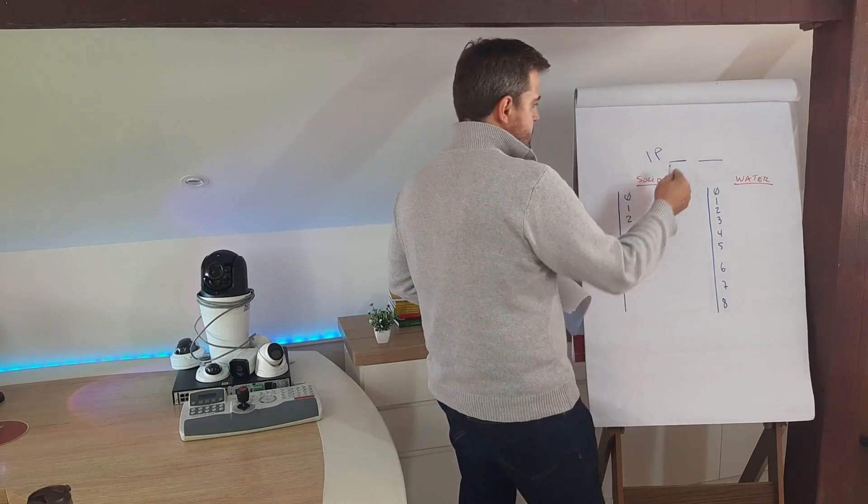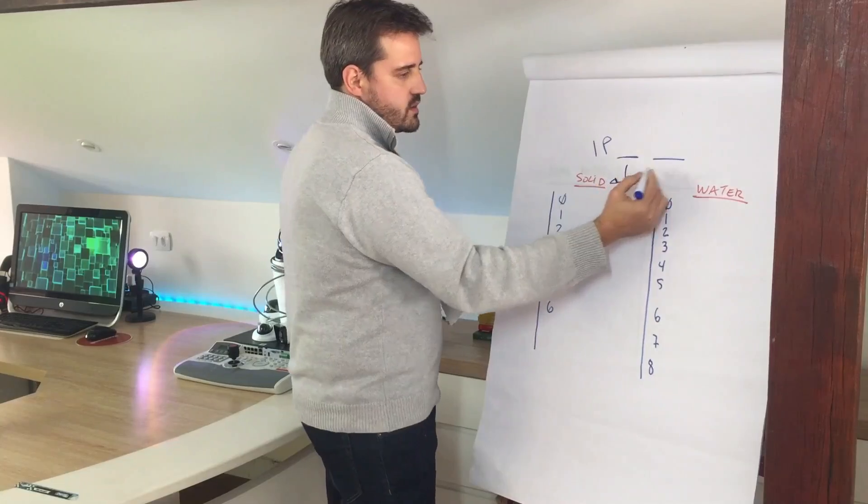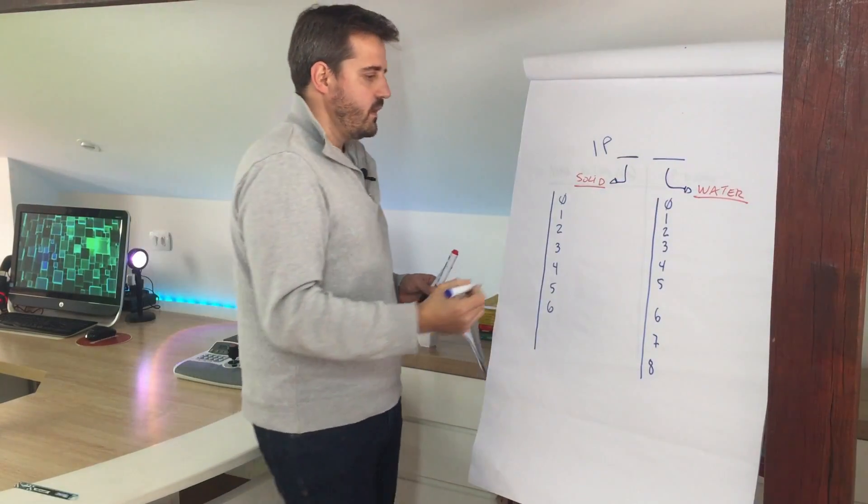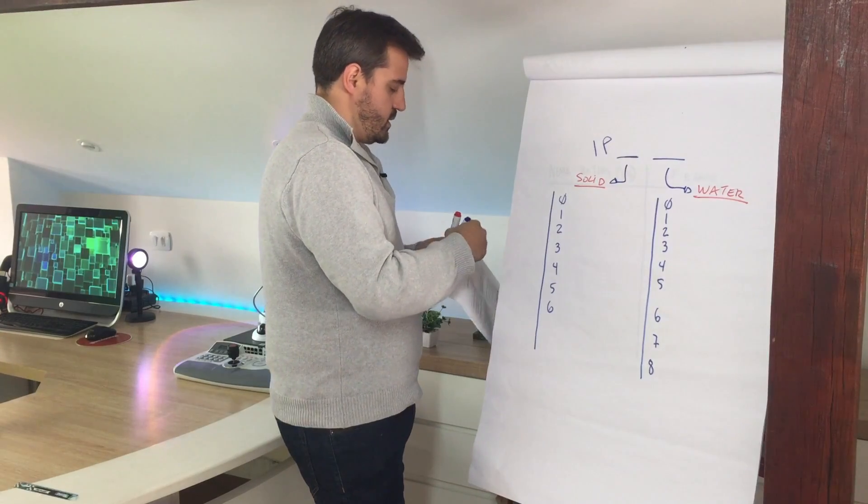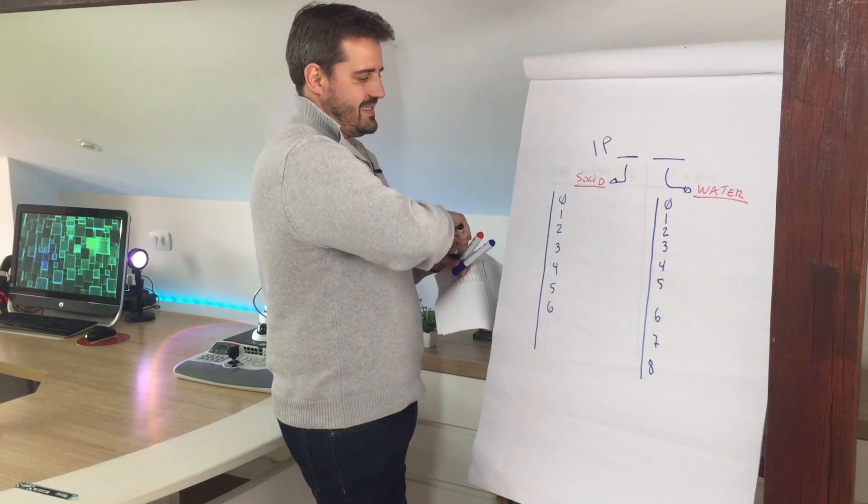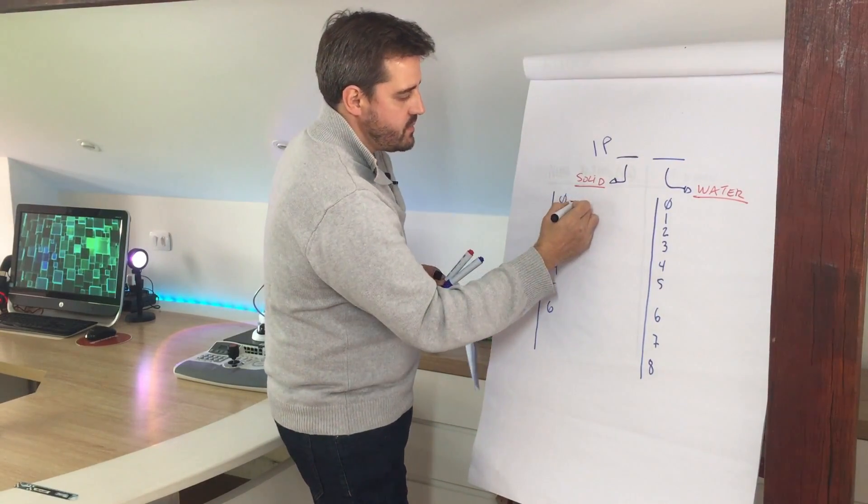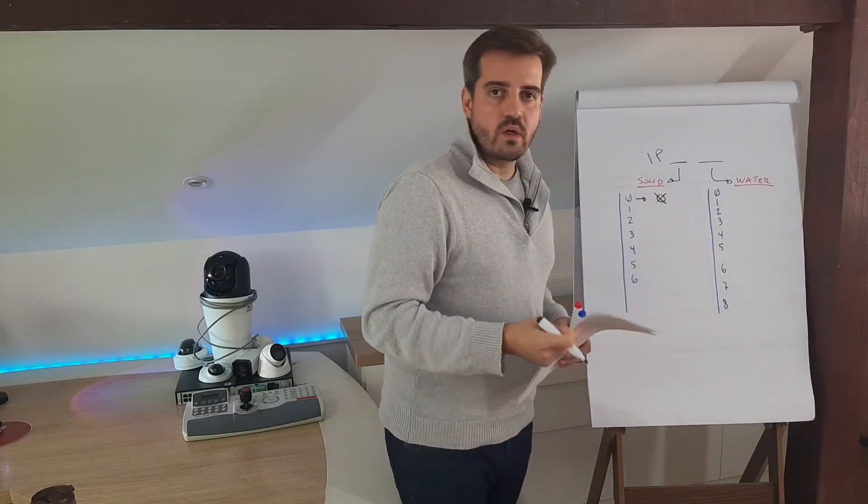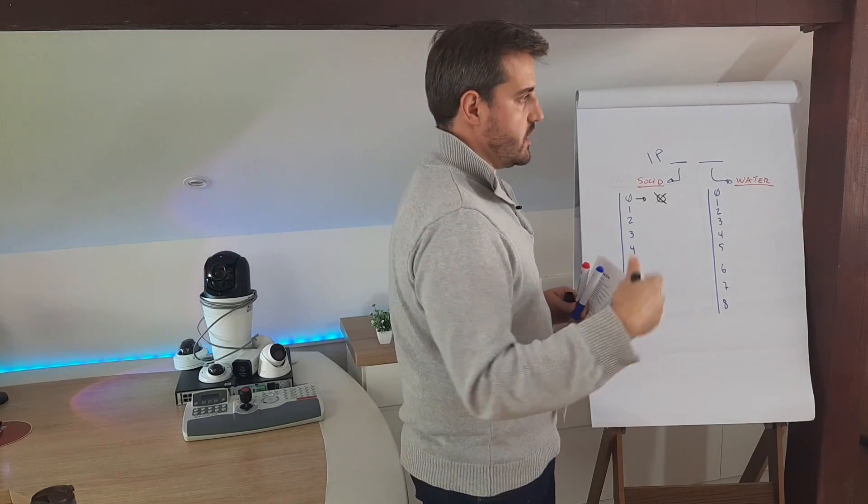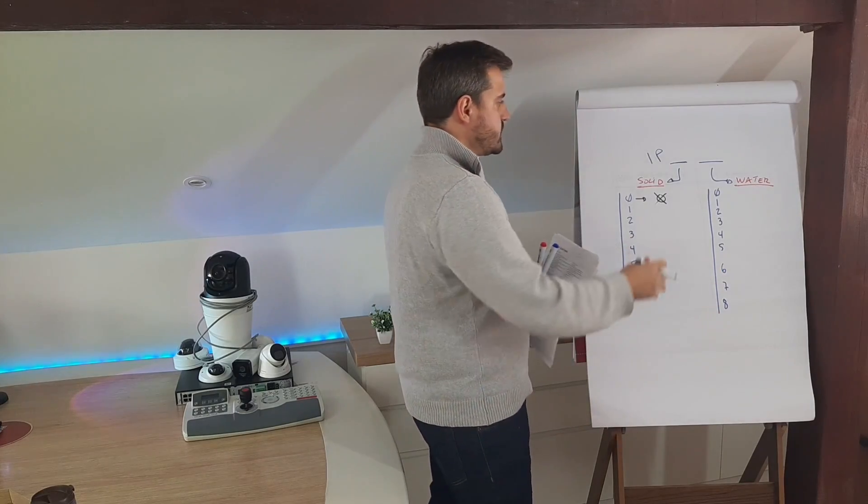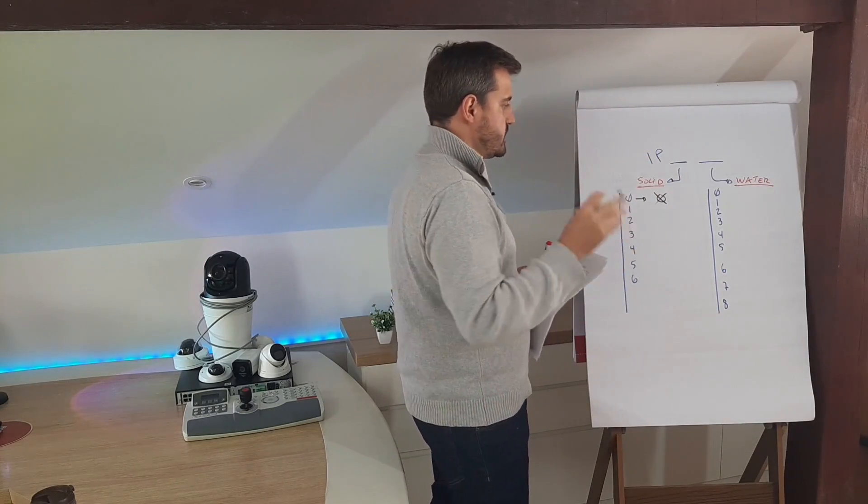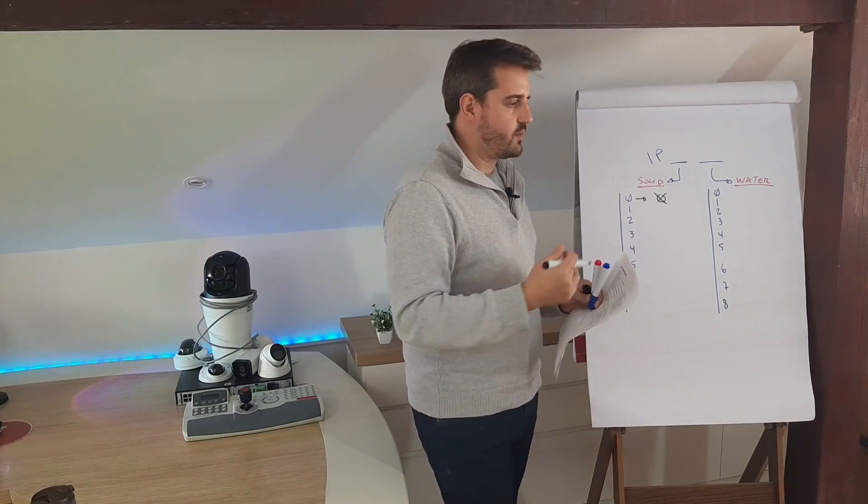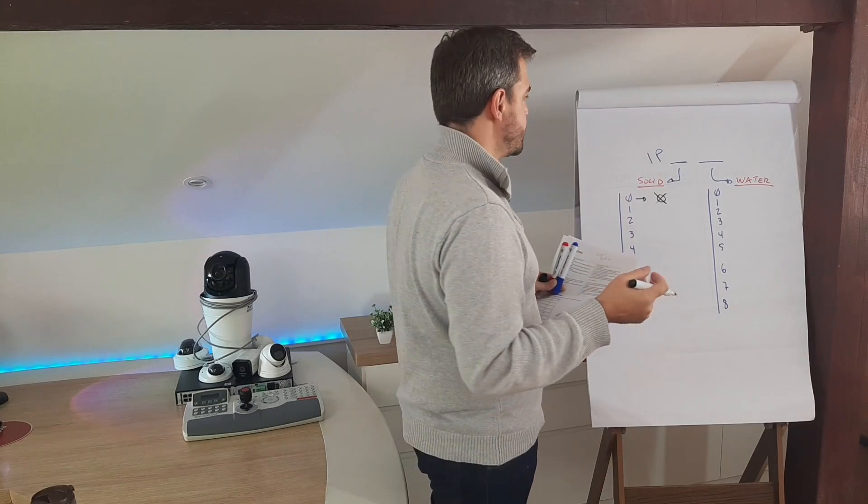So the first number here is related to solids and the second one is related to water. The first one is zero, so this means that we don't have any protection on solid, so dust and etc. Just recall this IP classification is not created only for cameras, it's related to any other object that can be tested.